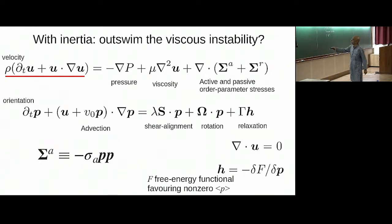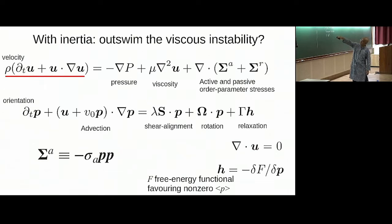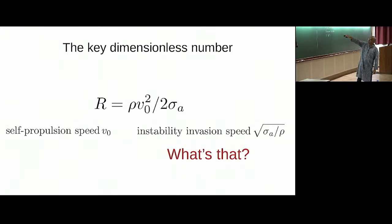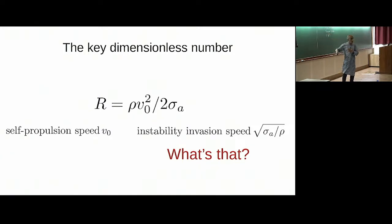Once you have motility, a nonzero mass density, and active stress, there is an important dimensionless number that looks like the ratio of an inertial stress to an active stress, but is better viewed as the ratio of two squared velocities: motility squared divided by sigma over rho. The square root of sigma/rho is a speed. I claim this is the invasion speed of the instability, and the other is the self-propulsion speed.